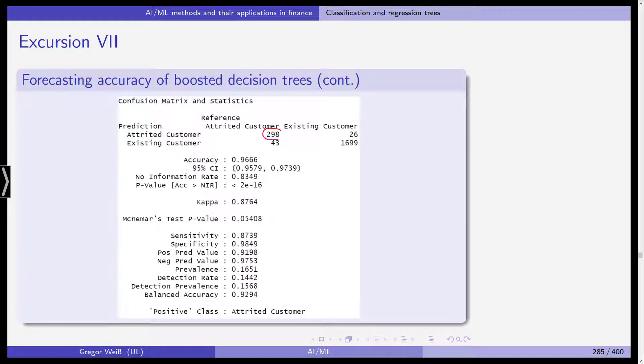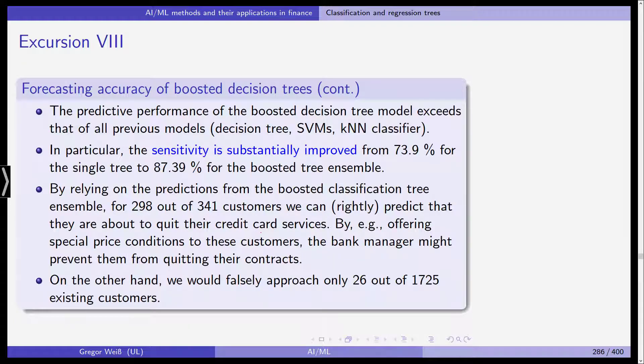We have an improvement compared to both the support vector machine and the unboosted classification tree. So the accuracy now increases to 97 percent, but most importantly, sensitivity increases. So it is a substantial improvement compared to all three previous models, the classification tree, support vector machine and k-nearest neighbor. And you can see this in the increase in the sensitivity. It increased from 74 to 87 percent for the boosted tree ensemble.